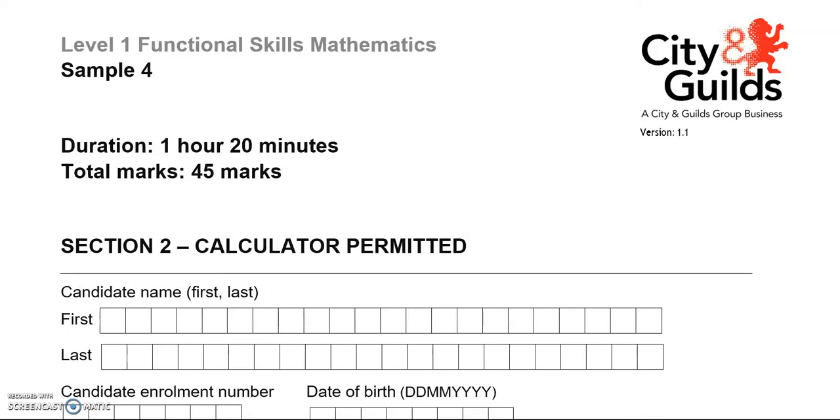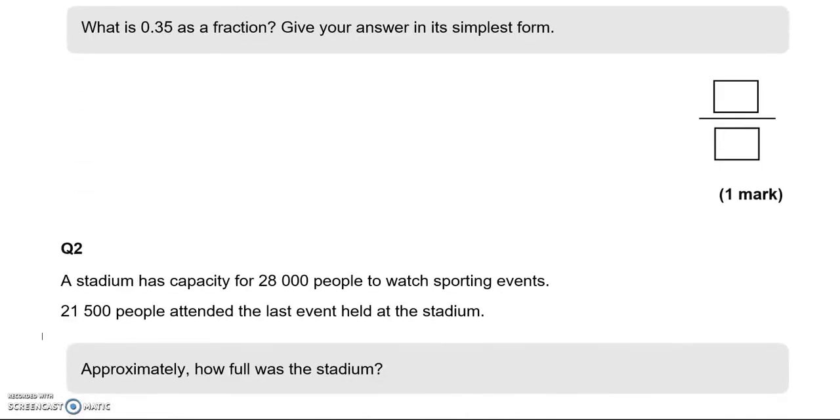This is the second part of a level 1 functional skills paper from City and Guilds. You can use a calculator for this part and there is a total of 45 marks. We'll have a look at the questions one by one.